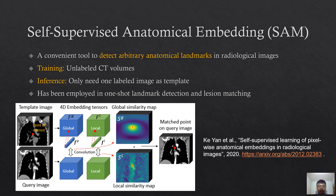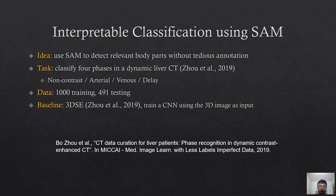Our idea is to rely on SAM to detect relevant body parts without tedious annotation, and then train a simple and interpretable classification model on those body parts. We illustrate our idea on the task of contrast phase classification in dynamic liver CT. We collected 1,000 training and 491 testing CTs, hoping to classify them into non-contrast, arterial, venous, and delay phases. Our baseline is a recent method that trains a CNN using the whole 3D image as input, without landmark guidance — it needs to learn relevant body parts from training data by itself.